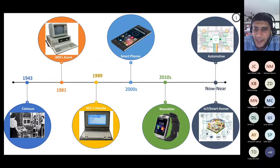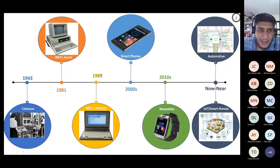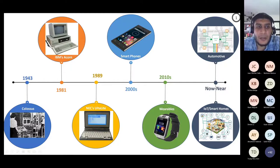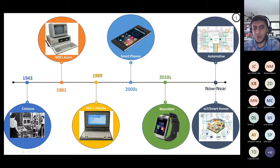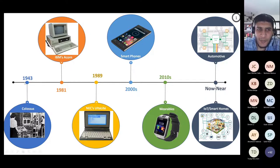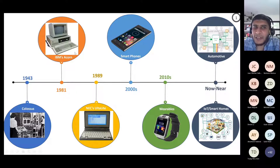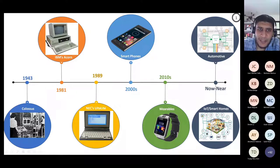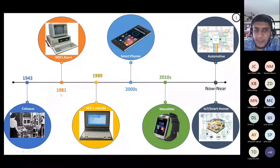Looking into the history of computing, we started from very big devices. One of the earliest actual computers is the Colossus computing system — it was as big as a room, so you had to walk inside the room to deal with it. This was in the 1940s. Then in the 1980s, we started having personal computers. One famous example is the IBM Acorn in the 80s.